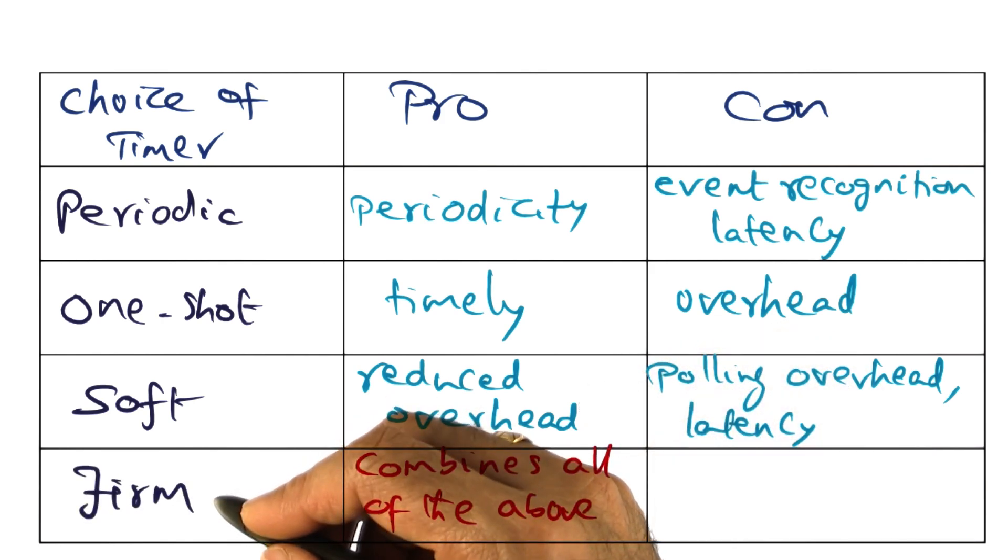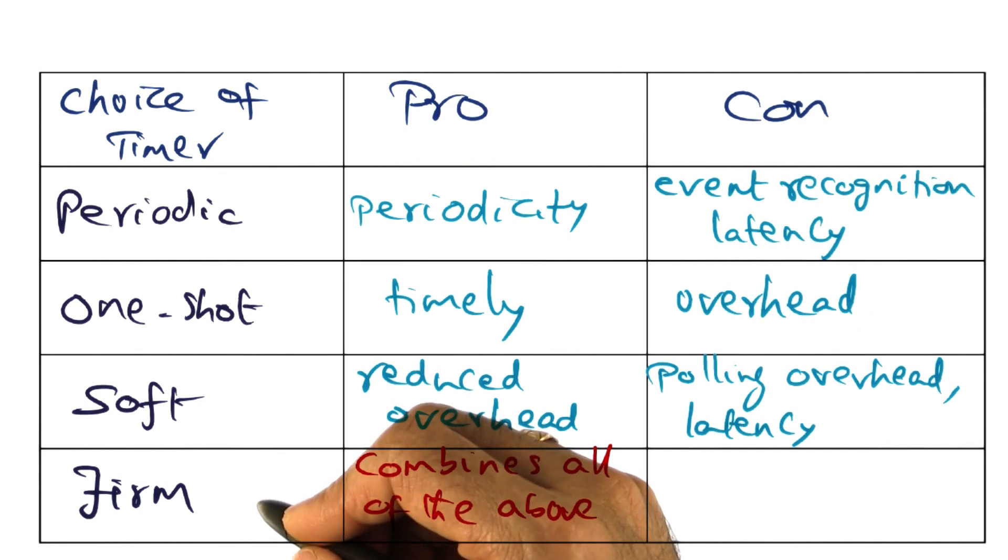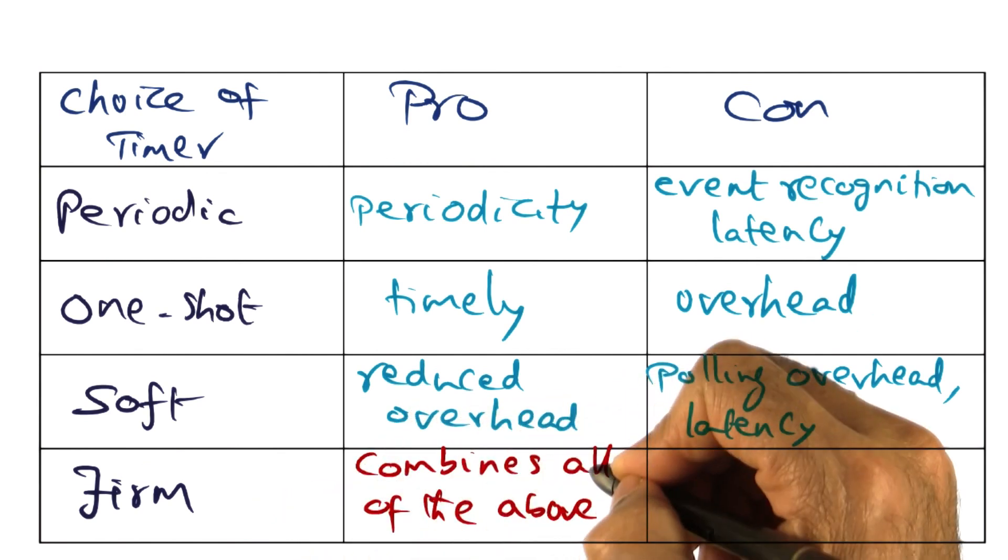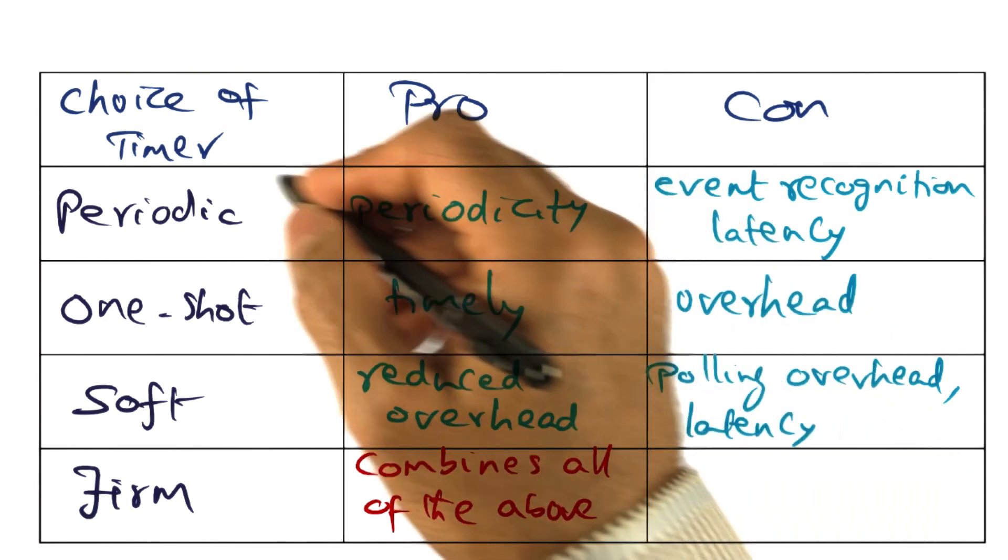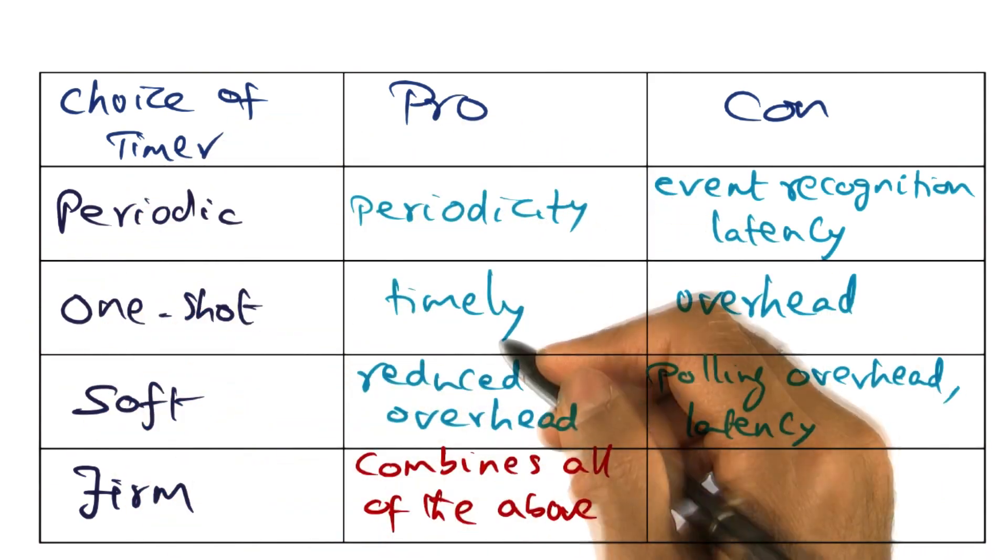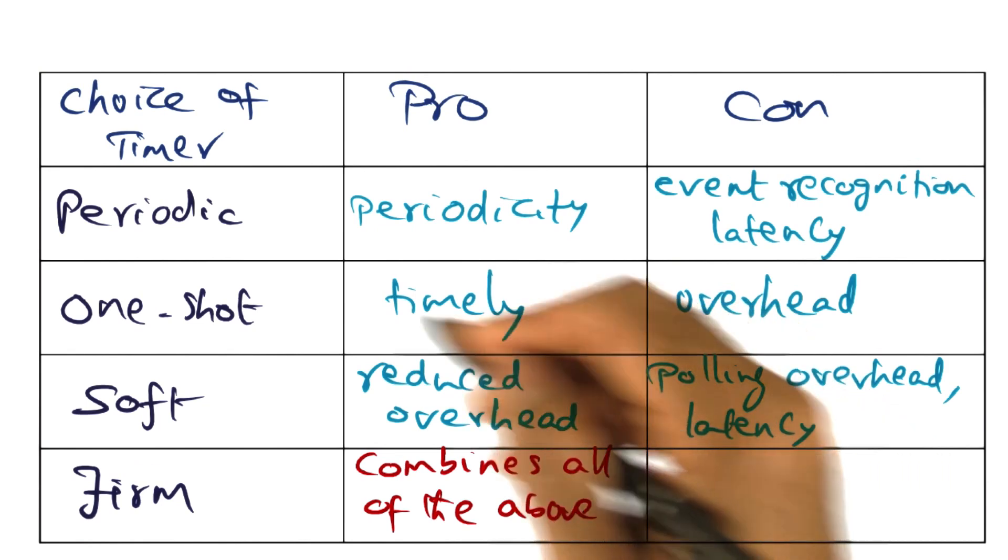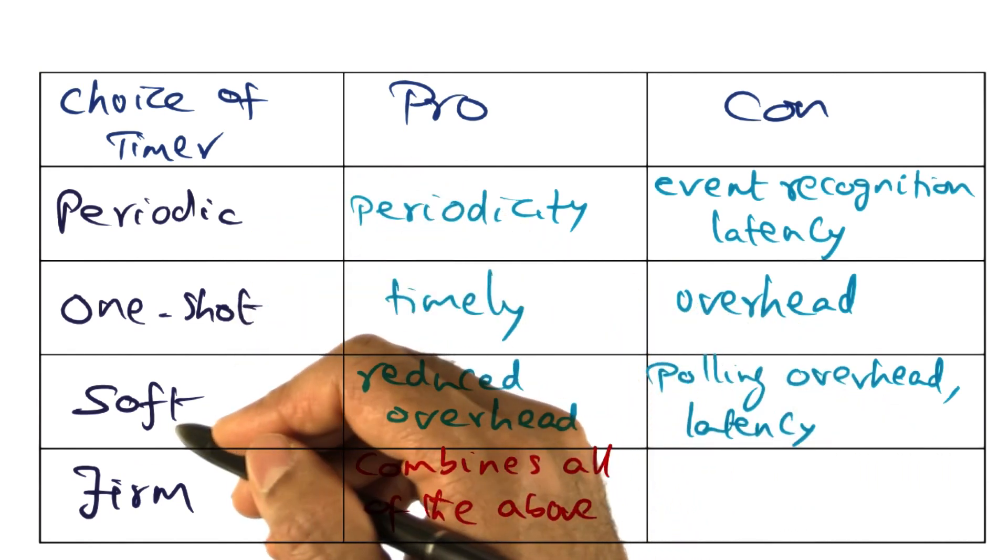Firm timer is a new mechanism that is proposed in TS Linux. And as we will see shortly, it combines the advantages of all the three timers that I just mentioned. The periodic timer, the one shot timer, and the soft timer.